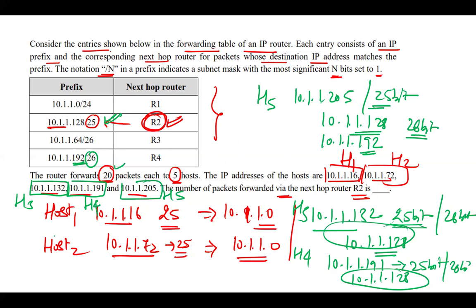So, host 3 sends 20 packets and host 4 sends 20 packets via router R2. Total 40 packets will be forwarded via router R2. So 40 is the correct answer for this GATE question. I hope the solution is clear to you all. Do subscribe to the channel for more such solutions.